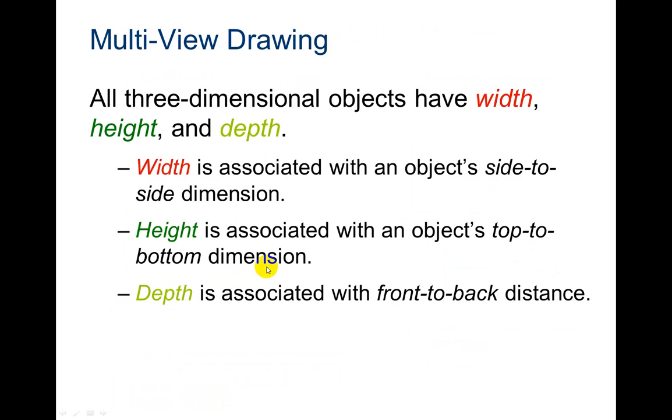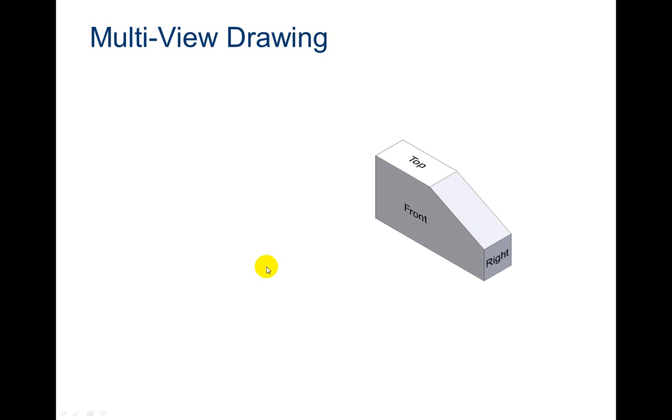Width being side to side, height being top to bottom, and depth being front to back. Here's an example of an isometric view of an object. So whenever you're drawing it as a multi-view drawing, here's what the top view would look like. Notice we have an edge here because we have a change in the depth.